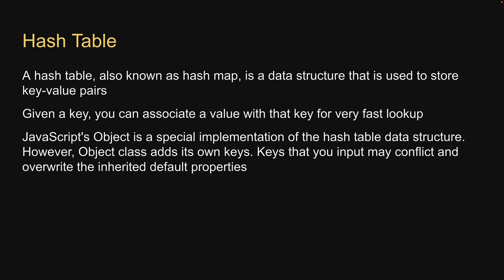JavaScript's Object is a special implementation of the hash table data structure. However, what you should know is that the Object class adds its own keys. So keys that you input may conflict and overwrite the inherited default properties.